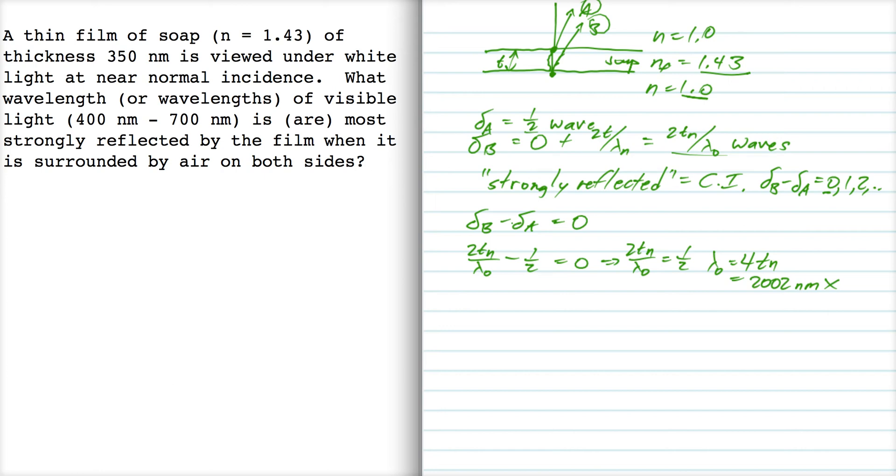lambda-naught is four t which is two thousand and two nanometers. Well, we're only interested in light that is between four hundred and seven hundred nanometers, so that's no good.